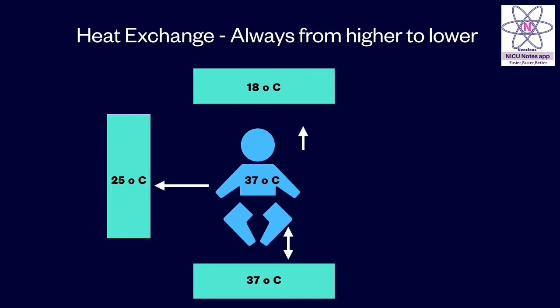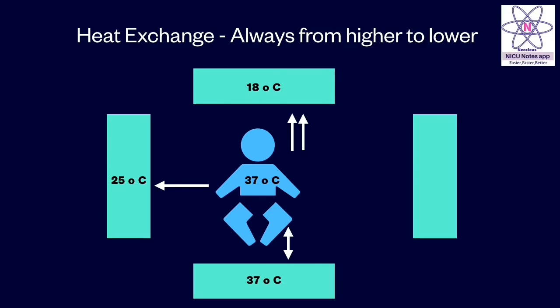If it is 18 degrees, it is much lower temperature, hence the heat loss happens very quickly and babies develop hypothermia very quickly. If the nearby surface temperature is higher, the heat loss happens from that surface to the baby, hence baby becomes very hot.